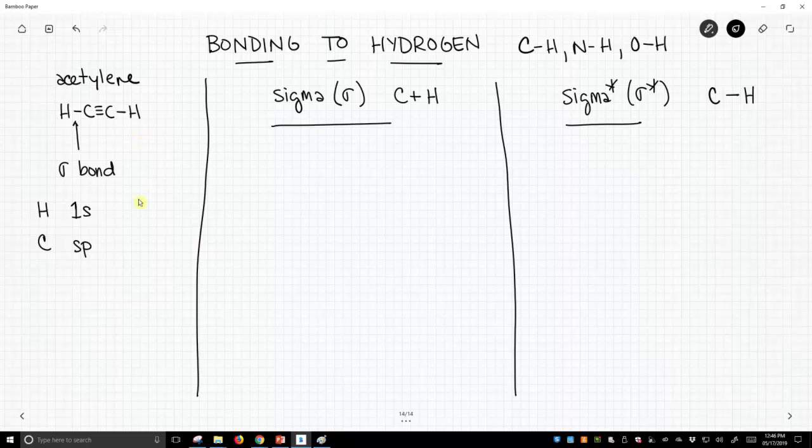We're going to mix two atomic orbitals, and our atomic orbitals are going to be these two. We're going to have a hydrogen 1s and a carbon sp hybrid, and we're going to mix those two atomic orbitals together to get two new molecular orbitals. It's going to have a form of sigma and a sigma star, a bonding and anti-bonding orbital.